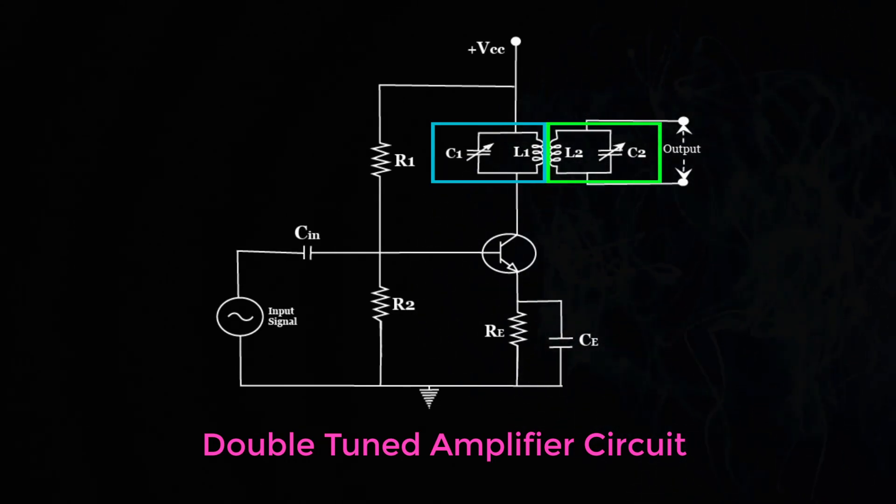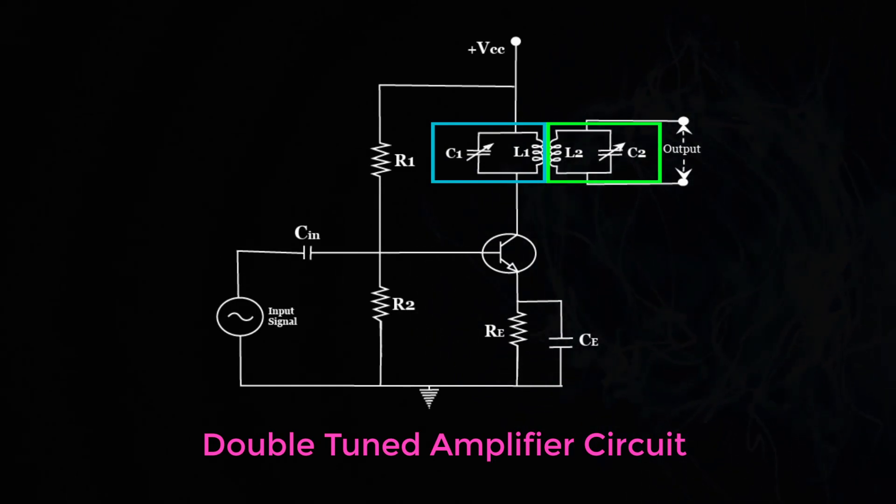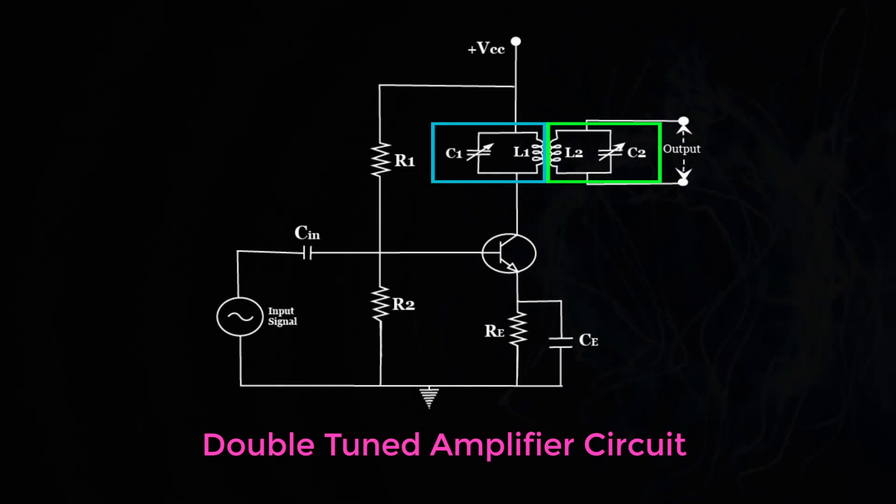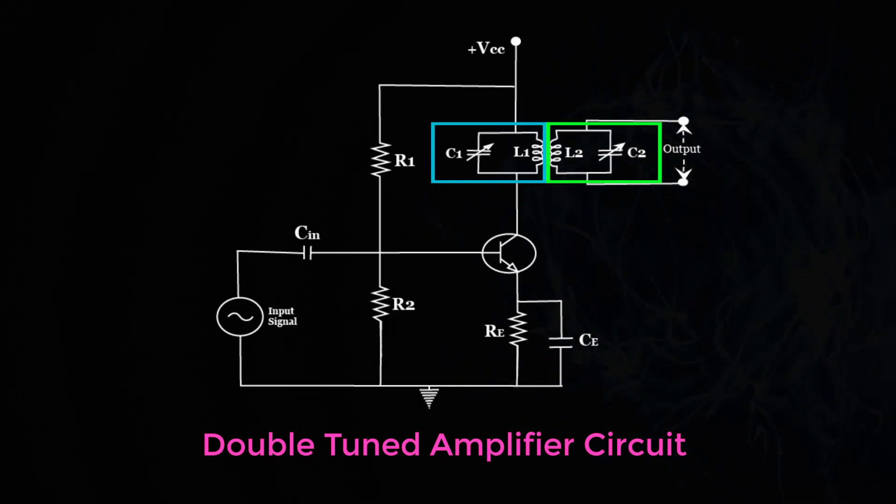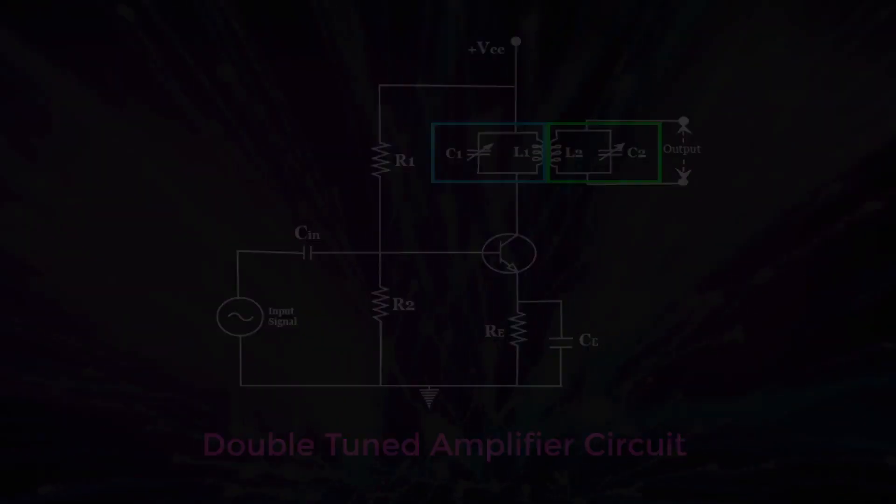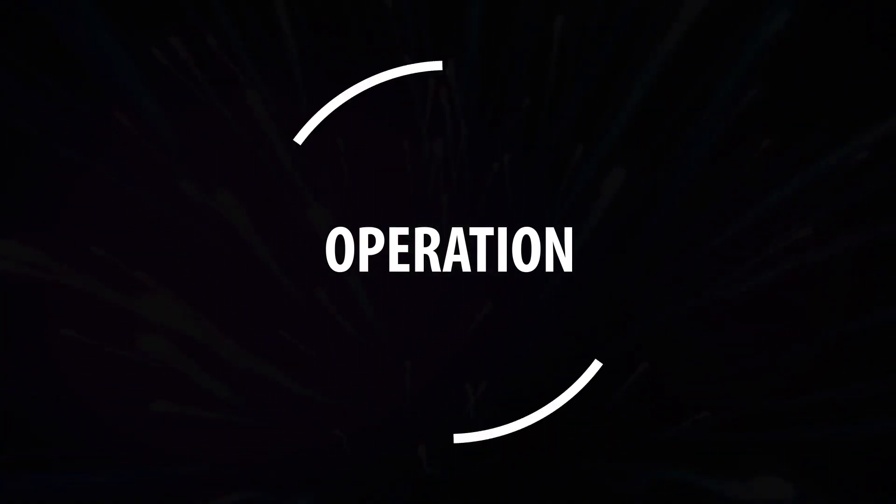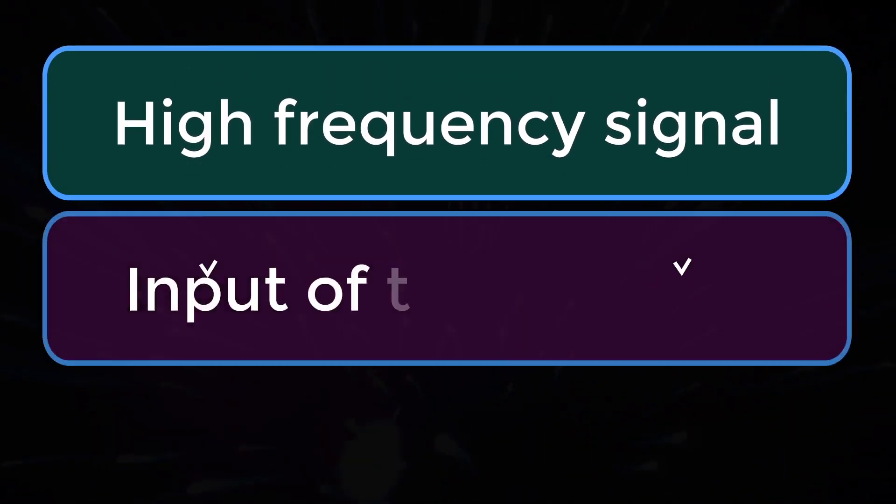The signal at the output of the tuned circuit L1 C1 is coupled to the other tuned circuit L2 C2 through mutual coupling method. Now let's look into the operation. The high frequency signal which has to be amplified is given to the input of the amplifier.